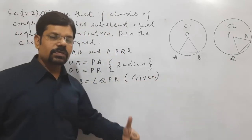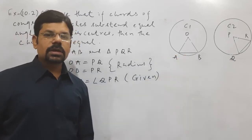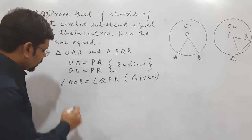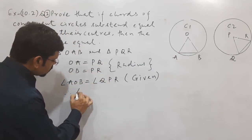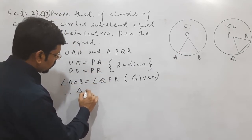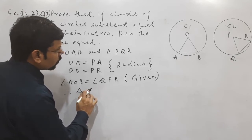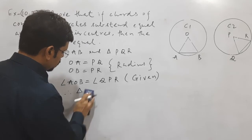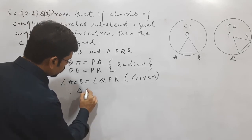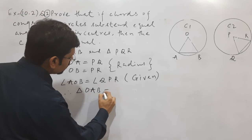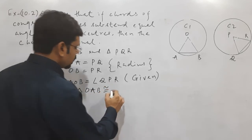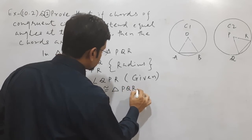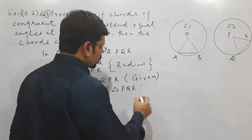Now again, three conditions are here we satisfy—these two angles are congruent, two sides and one angle. Therefore, these two triangles OAB is congruent to triangle PQR, this congruent by SAS.